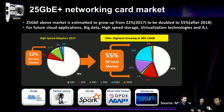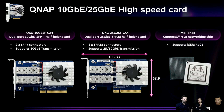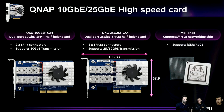We have two network cards. The first is the QXG-10G2SF-CX4: a dual-port SFP+ connector, half-height card supporting 10 gigabit Ethernet. The second is our 25 gigabit card — also dual-port with SFP28 connectors, a half-height card supporting 25 gigabit and 10 gigabit throughput. Both are standard PCIe cards and use the Mellanox ConnectX chip, which supports RoCE and iSCSI offload acceleration functions.